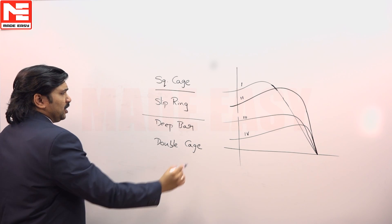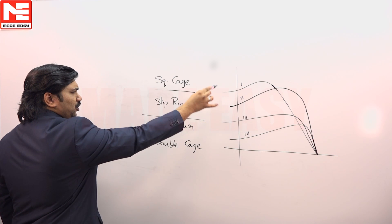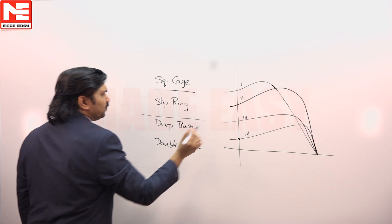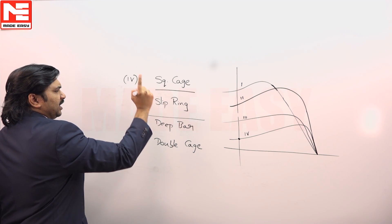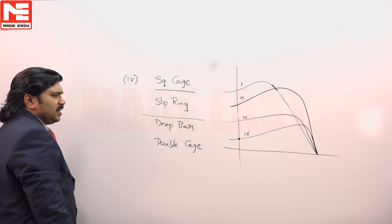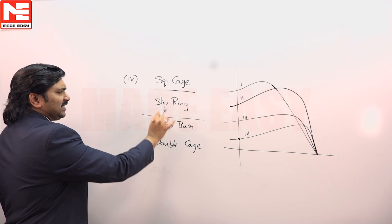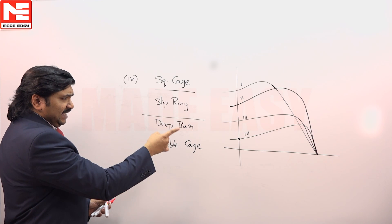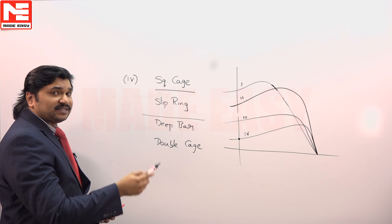So in all these four, which motors have low starting torque? This is the starting torque. So squirrel cage go to fourth one. By adding external resistance in series with the rotor, we make high starting torque come into picture. That is a slip ring.